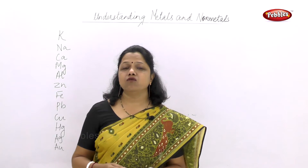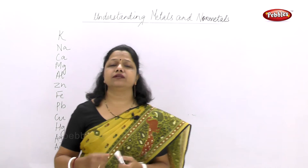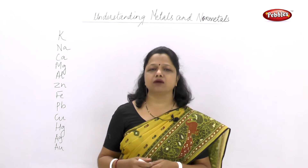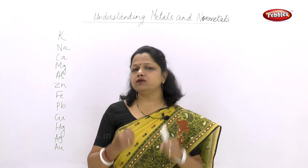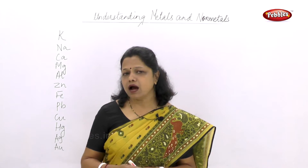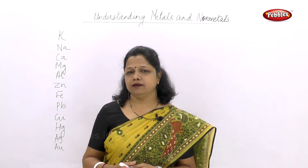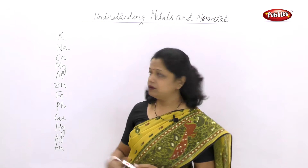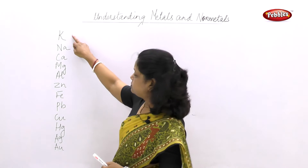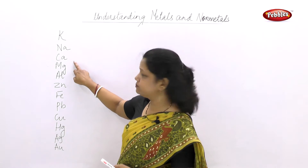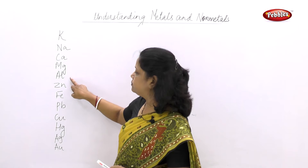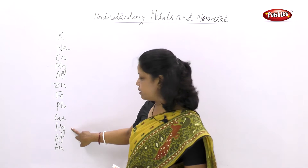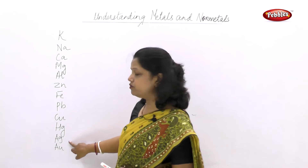Let us first see what is the activity series, that means how the metals are arranged in their decreasing order, because we want to understand how the metallurgy can be done. As you see, a list of metals is written here: potassium, sodium, calcium, magnesium, aluminium, zinc, iron, lead, copper, mercury, silver, gold.